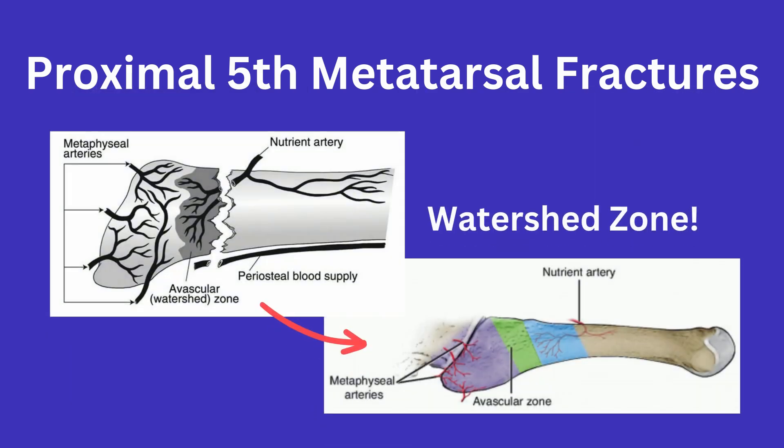Blood supply to the 5th metatarsal comes from the metaphyseal and nutrient arteries. However, this forms a watershed zone right about where this articulation occurs between the 4th and 5th metatarsals.